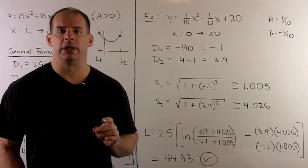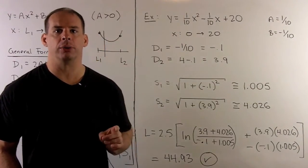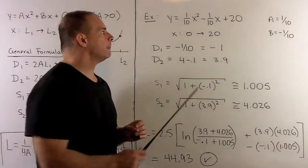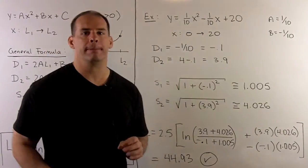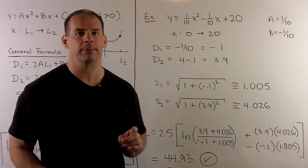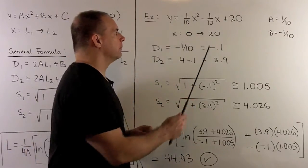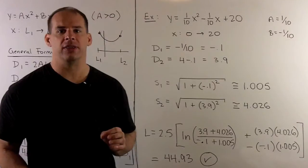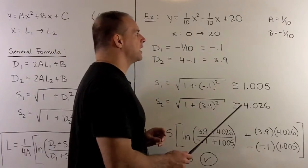Let's verify our formula using the example from part two. So, the parabola, y equals 1 tenth x squared minus 1 tenth x plus 20. x is going from 0 to 20. So, a is 1 tenth. b is equal to minus 1 tenth.